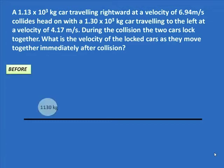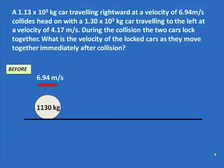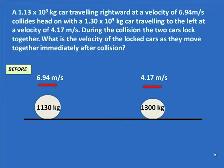An 1130 kilogram car travels to the right with a velocity of 6.94 meters per second, and collides head-on with a 1300 kilogram car traveling to the left at 4.17 meters per second.